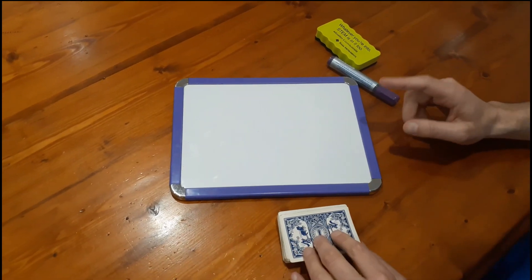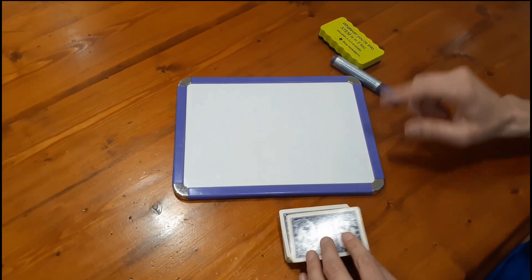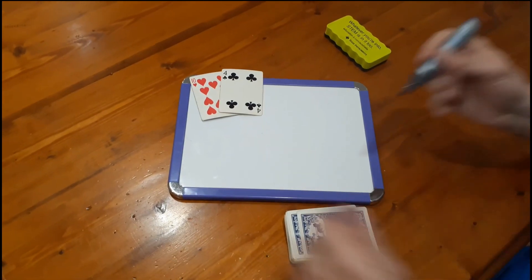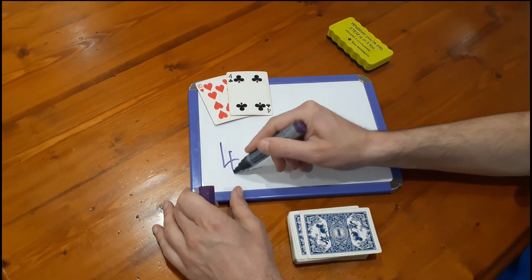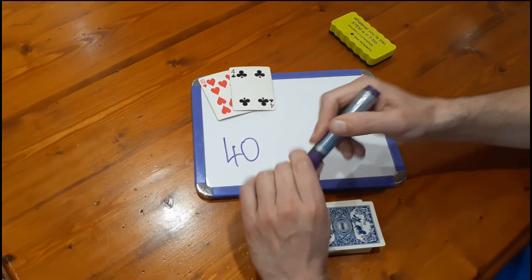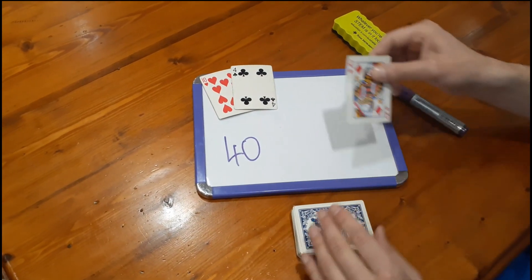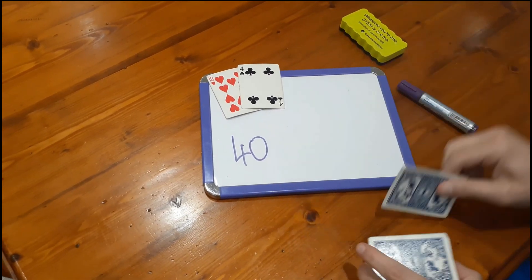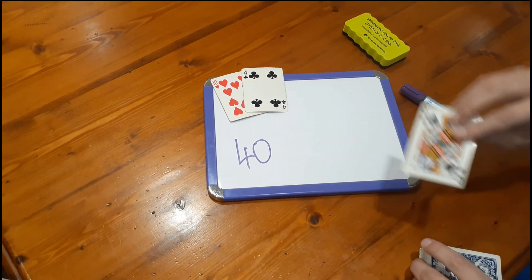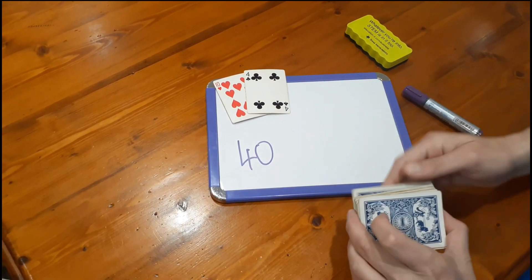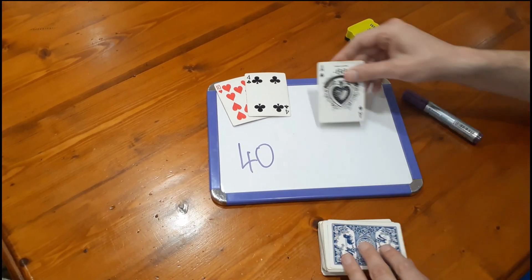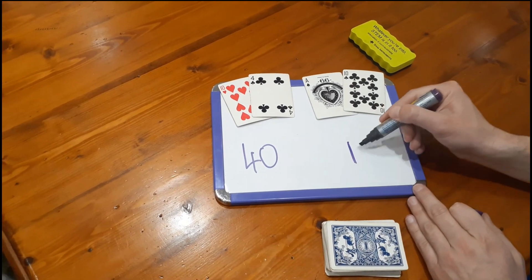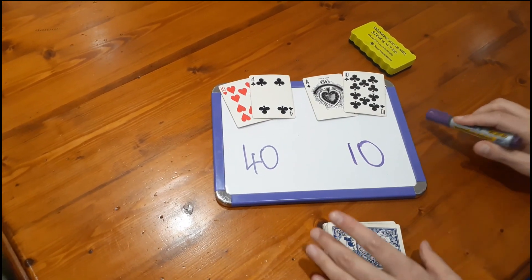To start off you need to generate two target numbers. To do that you just turn over the top two cards. Ten fours are 40. We keep the two cards up there for later reference. You can't have any picture cards — if you get a picture card just put it to the bottom of the deck. Queens by the way are zeros. One ten is ten, so these are our target numbers.